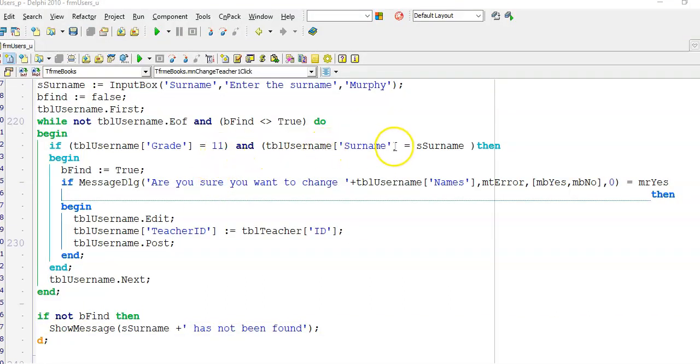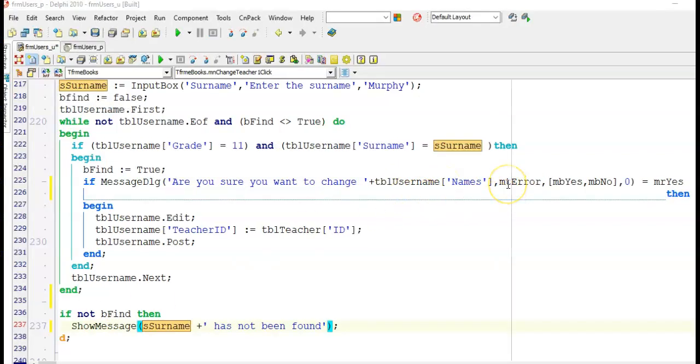Now, since I have found in our example Murphy, if I display TBL username names, I'll be displaying the name of Murphy because currently while I'm looping Murphy is the current active record.